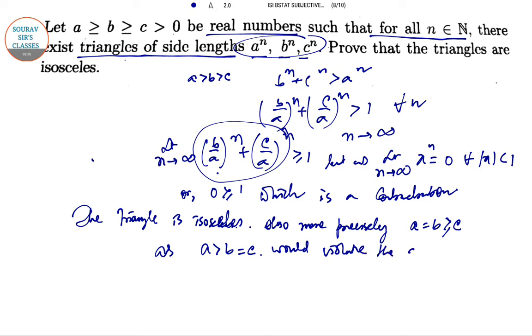So here we have simply used lim(n→∞) (b/a)^n = 1 if b = a, to justify the isosceles triangle property.